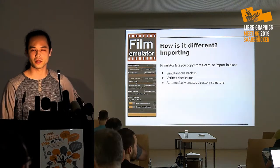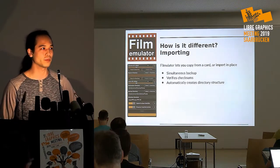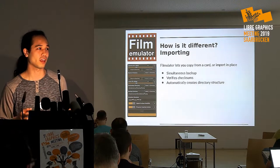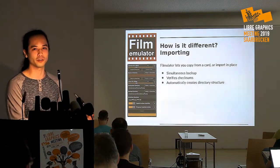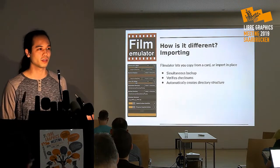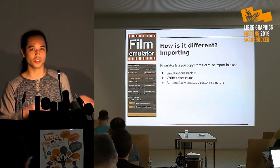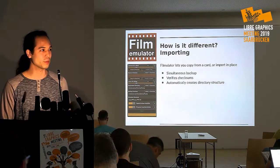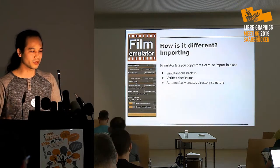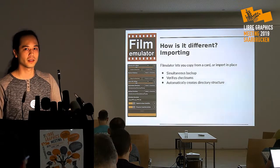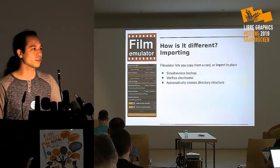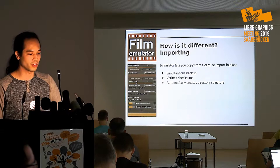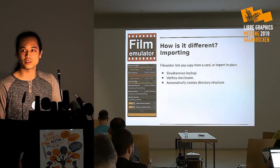Another difference from popular raw editors like RawTherapy and Darktable is that I actually support importing from card. I like to have it all in one tool — I don't want to use Rapid Photo Downloader or Digicam before switching to a separate image editor. Filmulator lets you copy from a card or import in place. It does simultaneous backup with hash verification, checking the hash of files after writing to verify secure copying. You can also have it automatically create a directory structure for your photos, so you don't have to organize them manually.